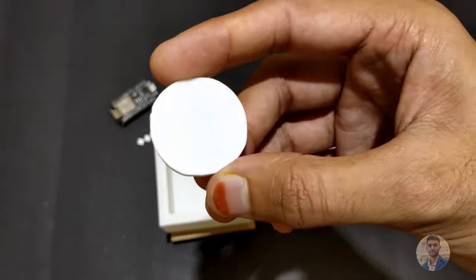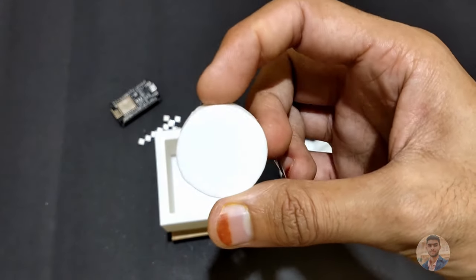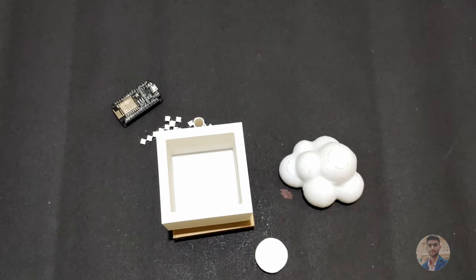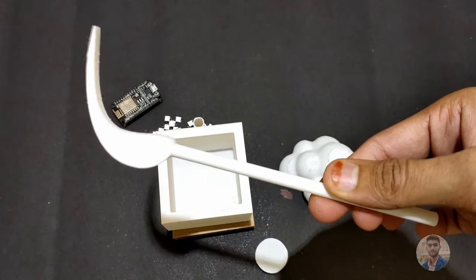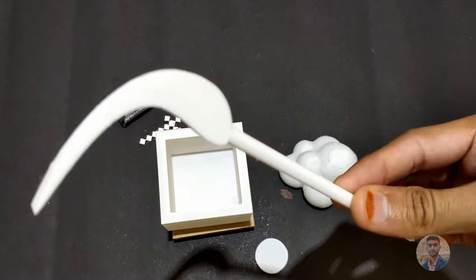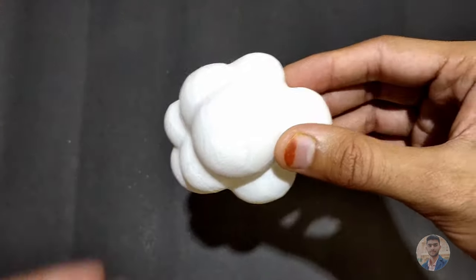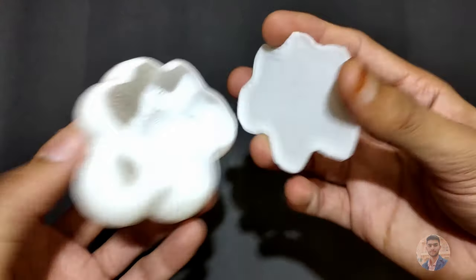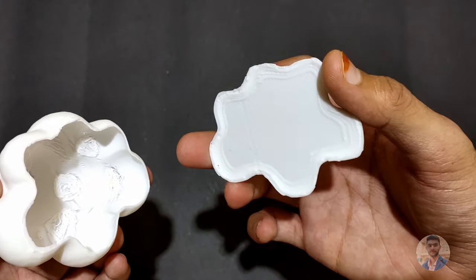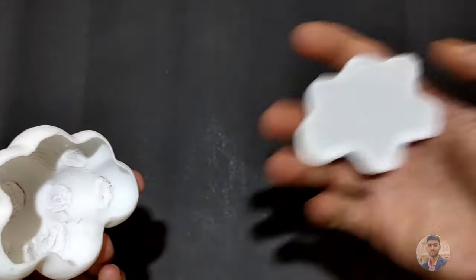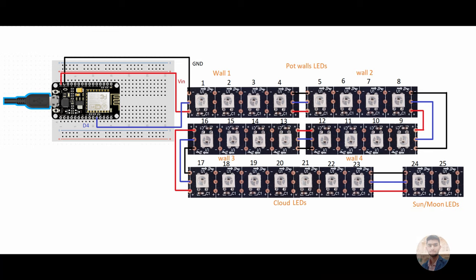I also have a 3D printed circle and this weird shaped stick for holding the cloud in place. I separated the base of the cloud with a knife so I can place the LEDs in and make the connections.